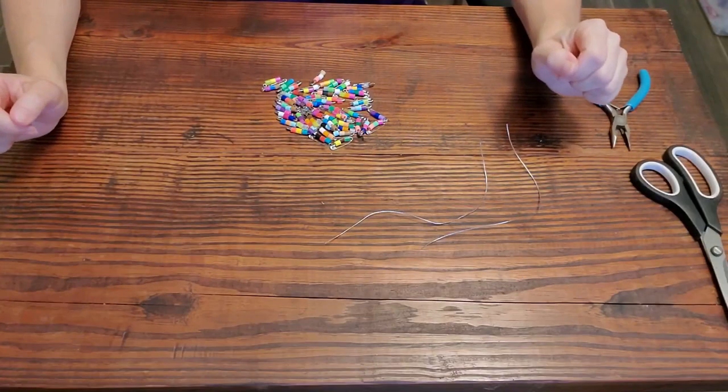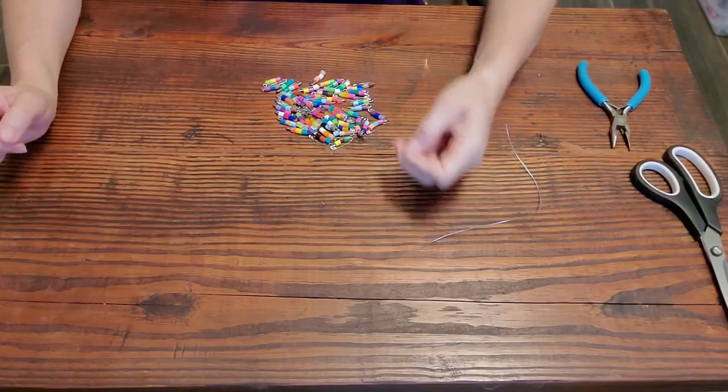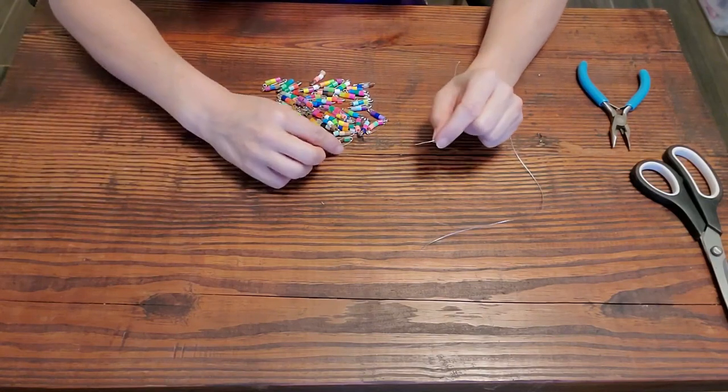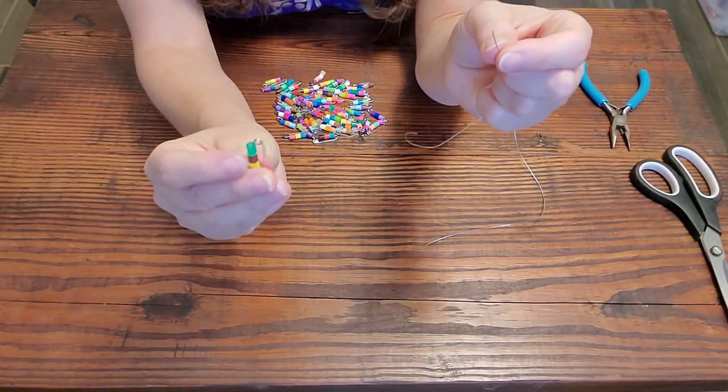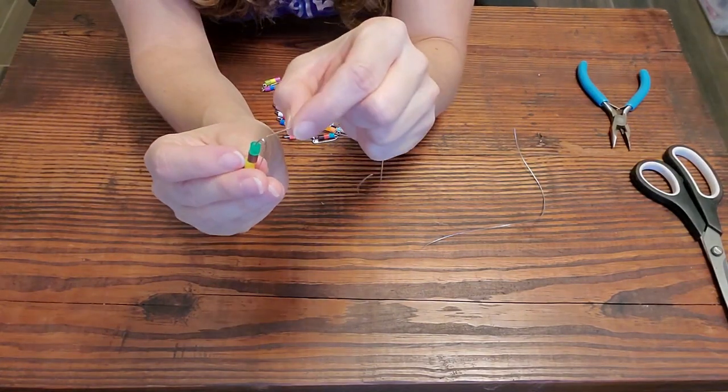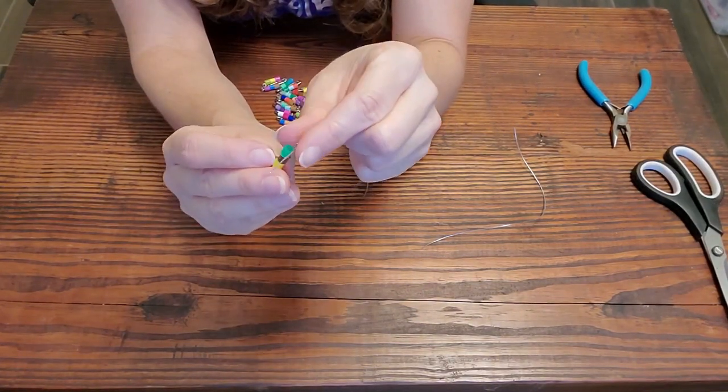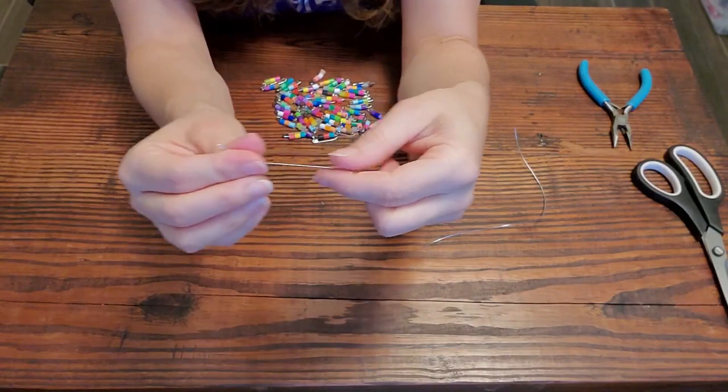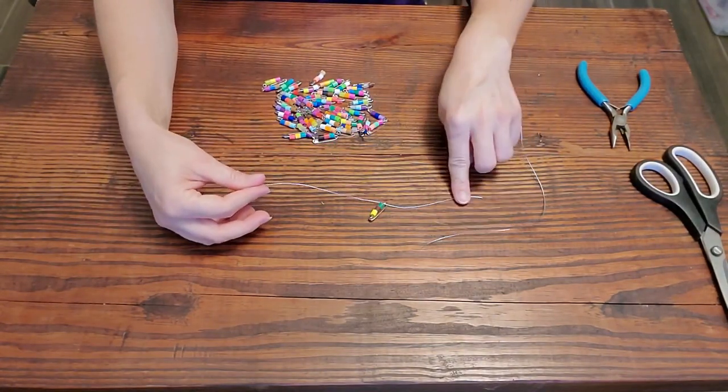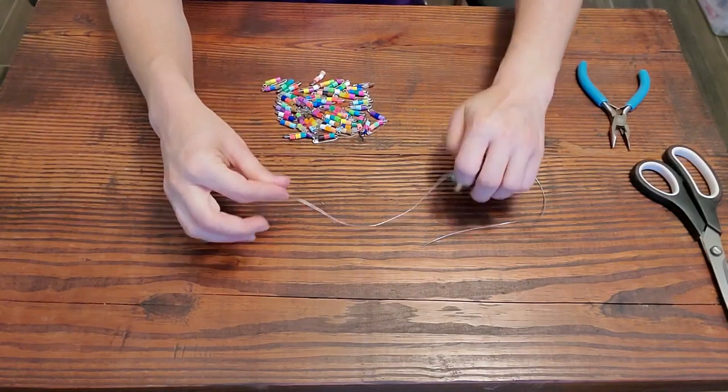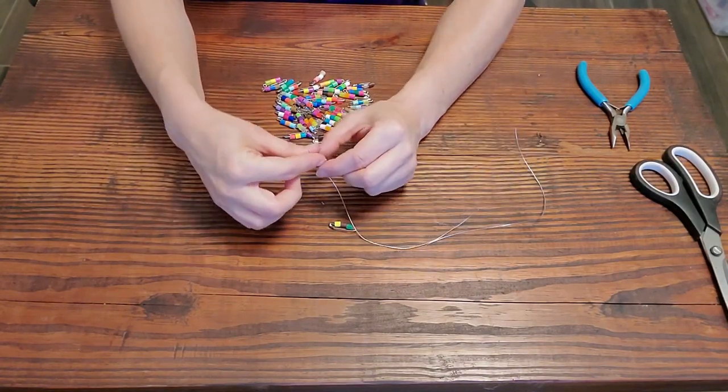Okay, so now we're going to string our safety pins. First, we're going to start off with just pick one safety pin, and you're going to put the string through the little hole at the top or at the bottom of your safety pin. Then, if you want to tape this down so they don't fall off the bottom, you can, or just be careful that you don't string it all the way through.